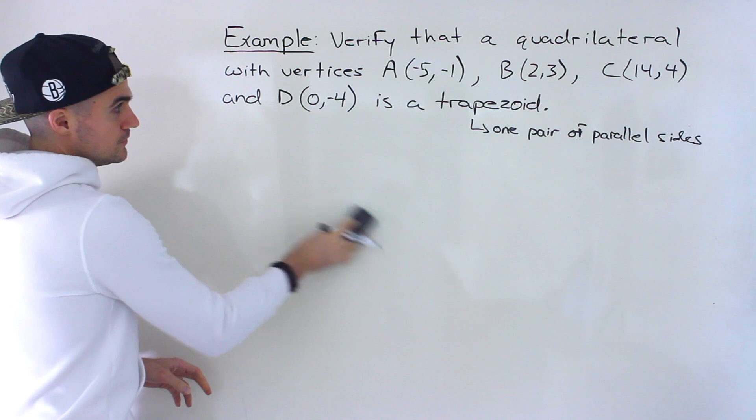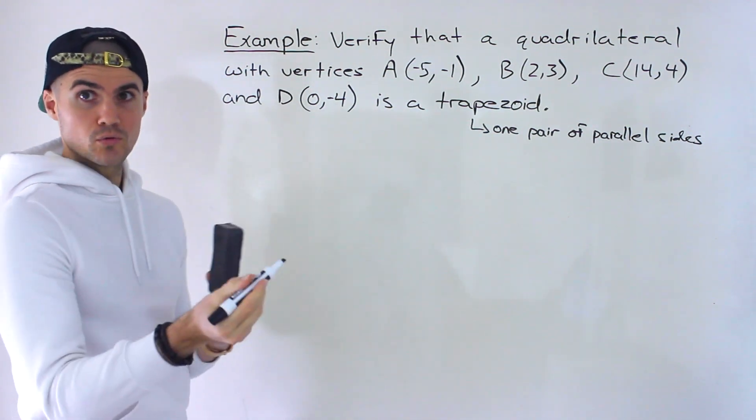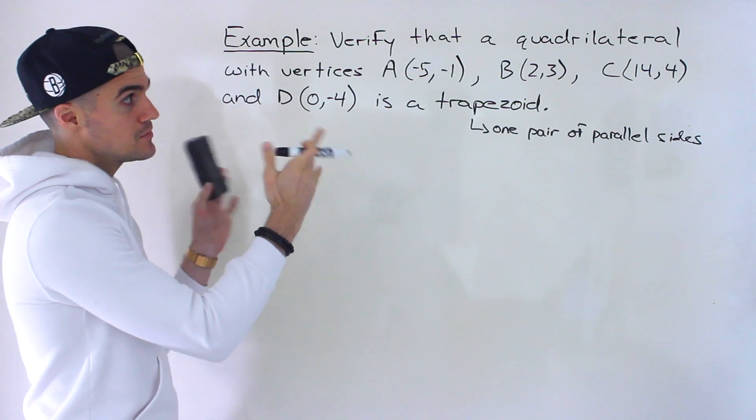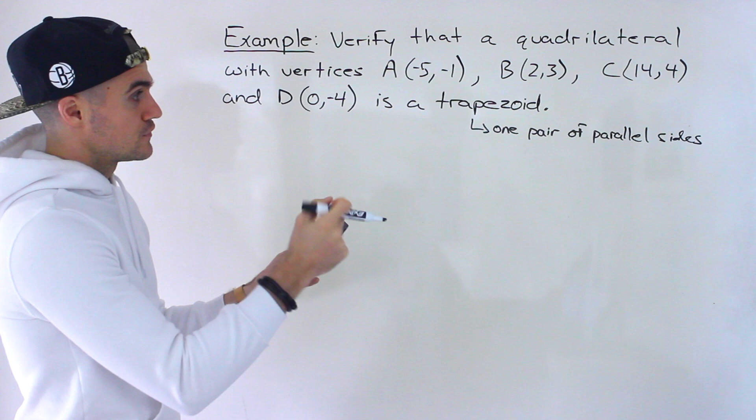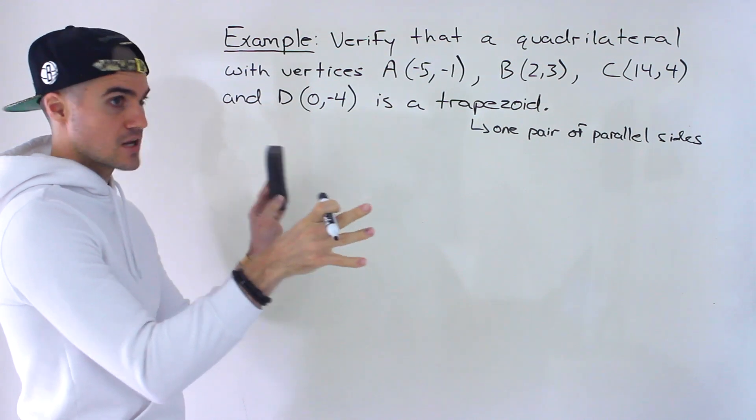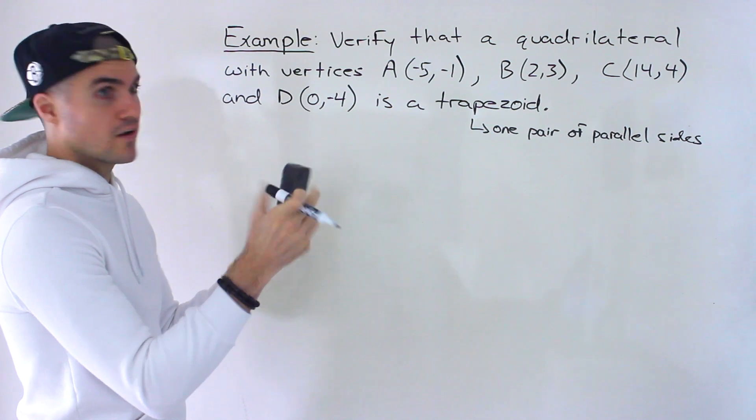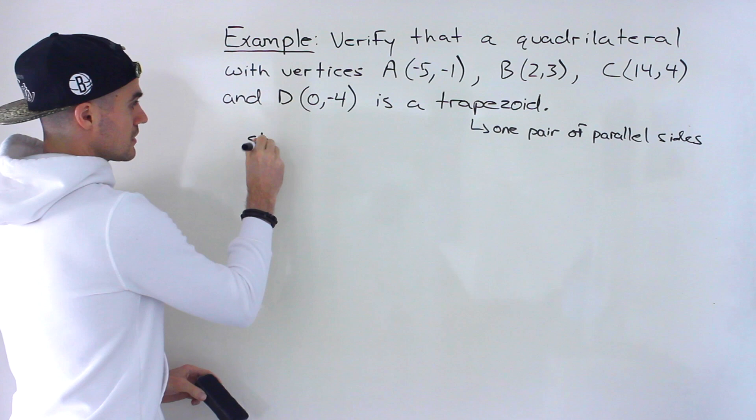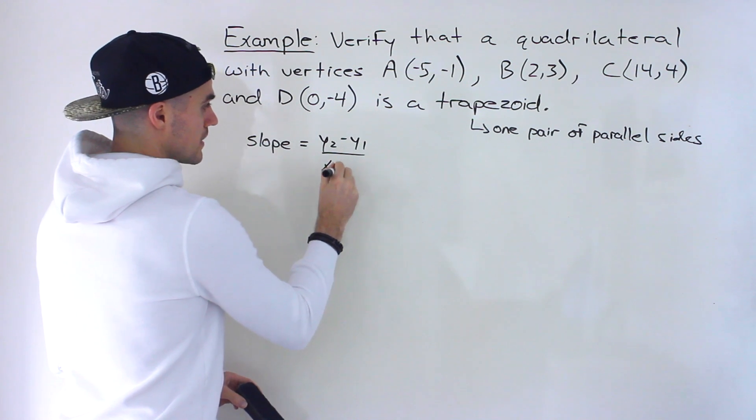And so really all we have to do is find the slope of each side. So we got A, B, C, D. So we would find the slope of AB, BC, etc. And then if two of the sides are parallel, only two sides are parallel, then the other two sides are not parallel. They don't have the same slopes. Then we verify that it's a trapezoid. And that's all we have to do. So we're just going to be using the slope formula a bunch of times. Just as a review, it's y2 minus y1 over x2 minus x1.